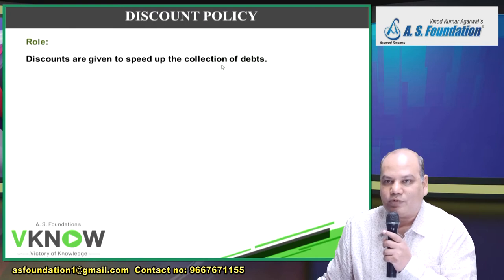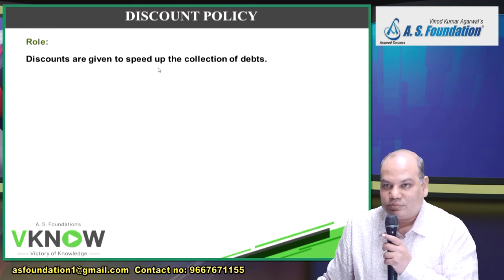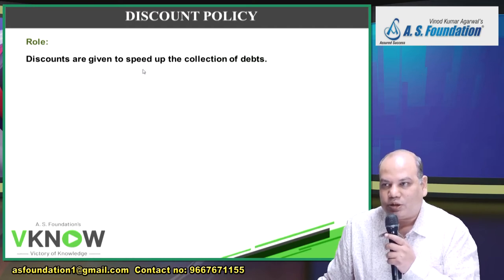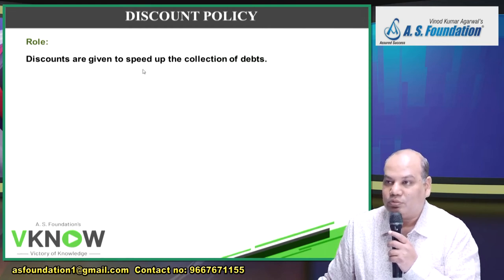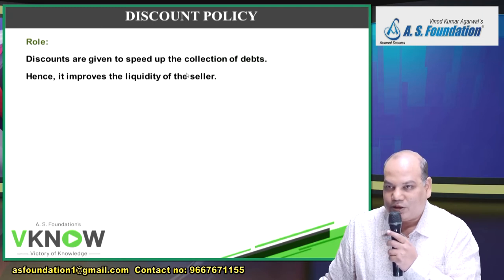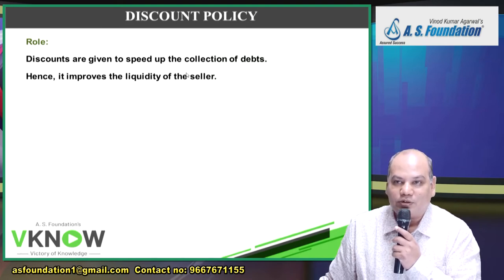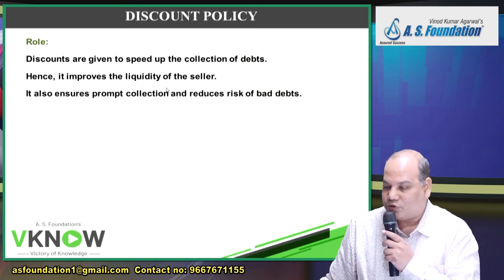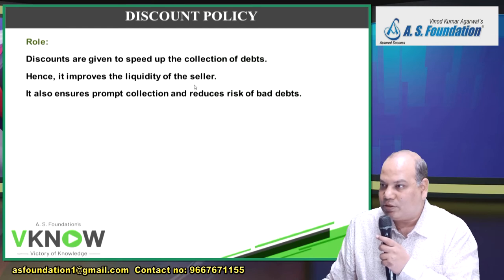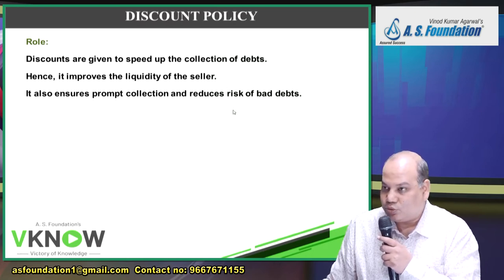Discounts are given to speed up collection of debts. The difference between trade discount and cash discount: trade discount is given to promote sales and increase the quantum of sale, while cash discount is given to motivate early or prompt payment. If the customer makes early payment, they get a cash discount. This improves the liquidity of the seller — you get cash flow earlier because there is an incentive to make early payment.